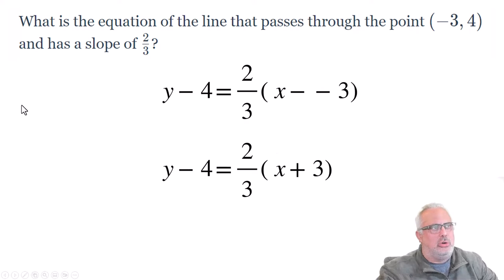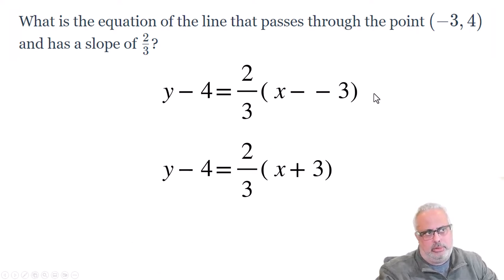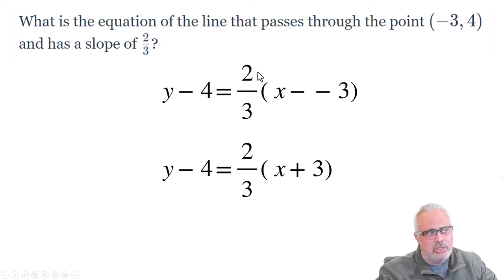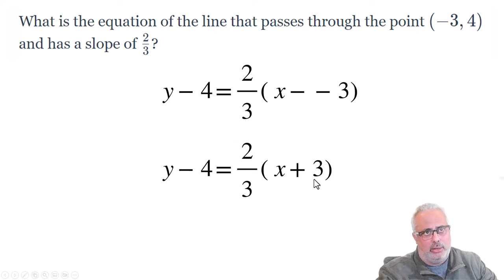Let's see one classic example of a linear function in point-slope form. What is the equation of the line that passes through the point (-3, 4) and has a slope of two-thirds? We have the two elements: the point (-3, 4), so x1 is negative 3 and y1 is 4, and the slope is 2/3. We substitute into the form: y minus 4 equals two-thirds times the quantity x minus negative 3, which gives us x plus 3. So now we have the equation in point-slope form with point (-3, 4) and slope 2/3.